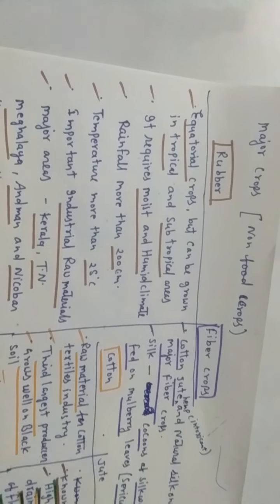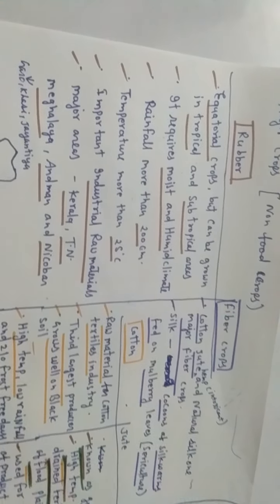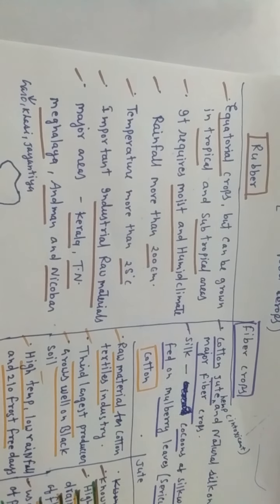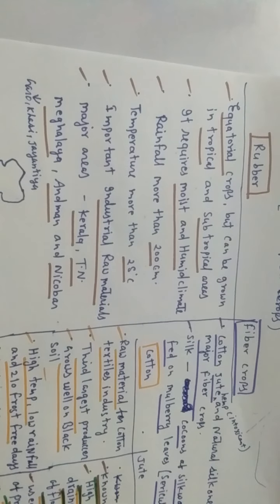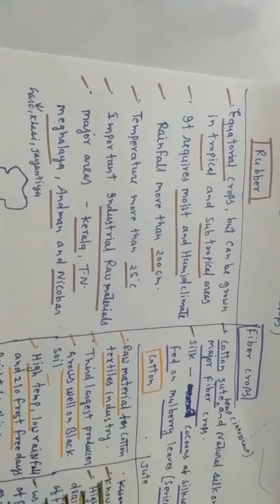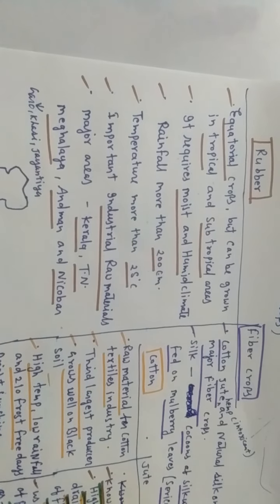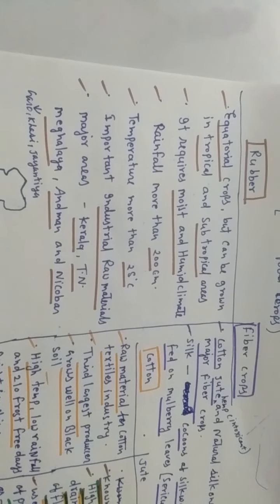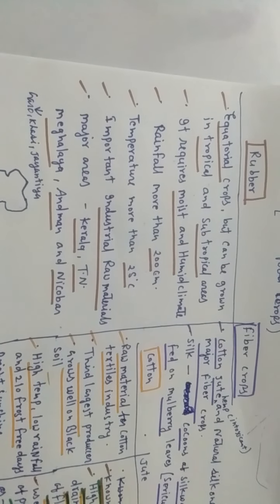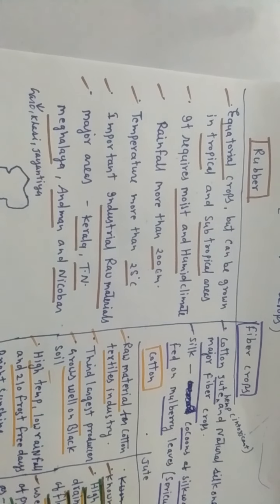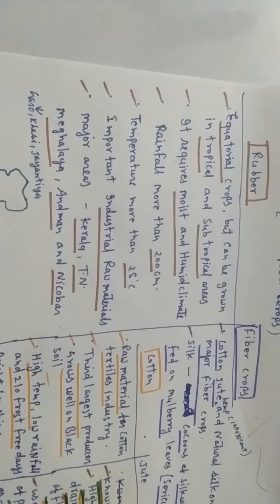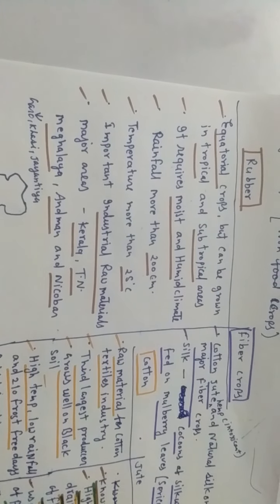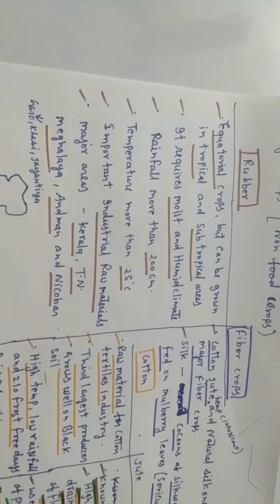Major crops means non-food crops, where we will discuss rubber fiber crops. Rubber is a very important crop of India. It is an equatorial crop but can be grown in tropical and subtropical areas. What are equatorial crops and what are the differences between tropical and subtropical? Equatorial crops means the area in the earth where the equatorial line is going through, the center of earth. Tropical and subtropical region means the northern part from the equatorial line is known as subtropical region, and downside of that, Tropic of Cancer, is known as tropical region.